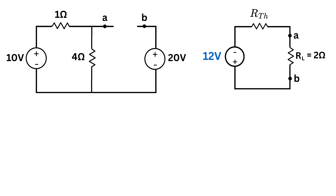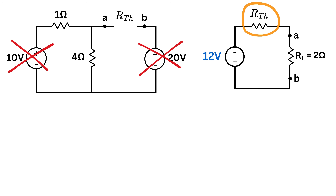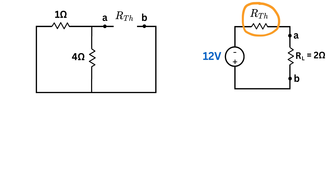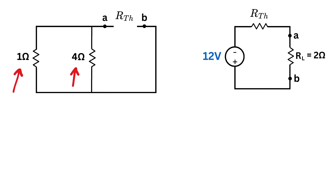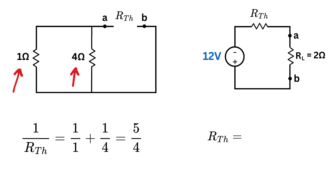Next we will find the Thevenin resistance, which is RTH. To do that, we deactivate all the independent sources, which means we replace all the voltage sources with short circuits. Also, right now we do not have any current source, but if we do, then we simply make it open circuit while calculating the Thevenin resistance. As soon as we do that, we can see that we can move this 1 ohm resistor here. So we can clearly see that both the 1 ohm and 4 ohm resistors are in parallel, and thus we can find RTH using 1 over RTH equals 1 over 1 plus 1 over 4, which equals 5 over 4. So RTH equals 4 over 5, or 0.8 ohms.